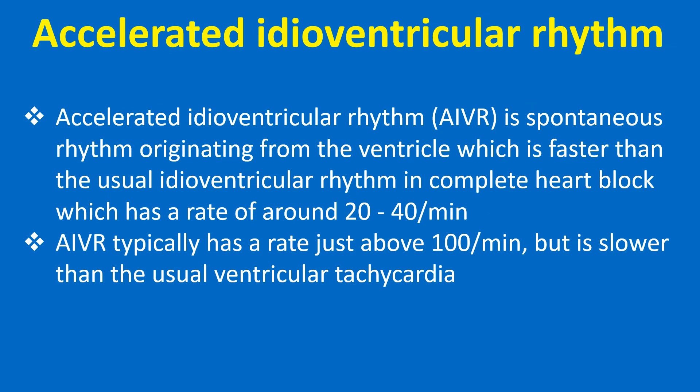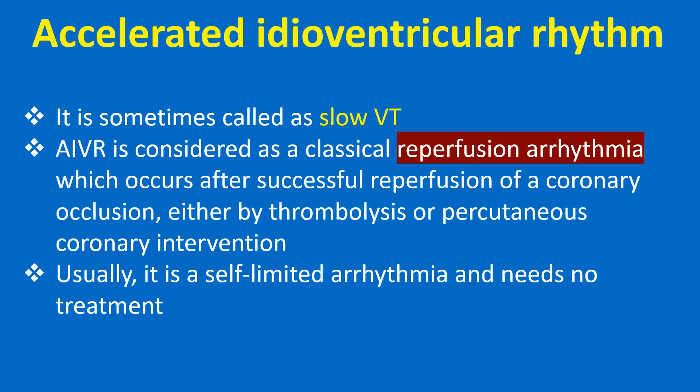Accelerated idioventricular rhythm or AIVR is a spontaneous rhythm originating from the ventricle which is faster than the usual idioventricular rhythm in complete AV block, which has a rate of around 20 to 40 per minute. AIVR typically has a rate just above 100 per minute but is slower than the usual ventricular tachycardia, and is sometimes called slow VT. AIVR is considered a classical reperfusion arrhythmia which occurs after successful reperfusion of a coronary occlusion, either by thrombolysis or percutaneous coronary intervention. Usually it is a self-limited arrhythmia and needs no treatment.